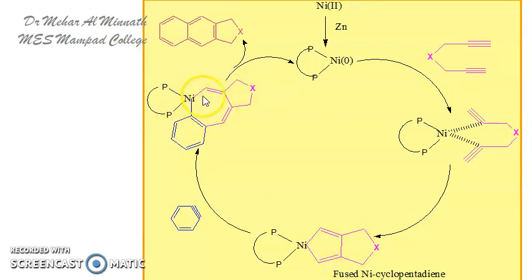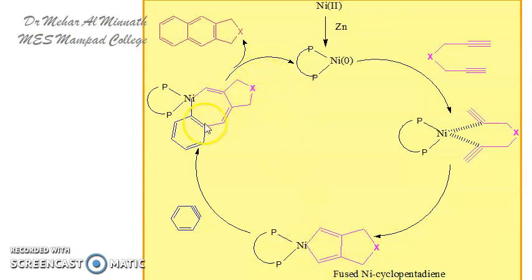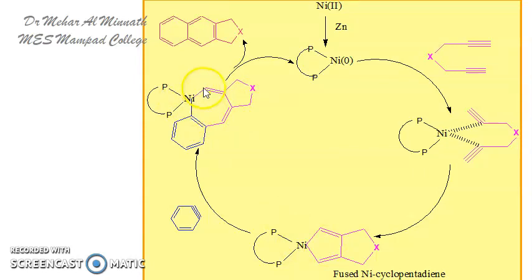When the benzyne is introduced, there is a five-membered ring, and a seven-membered ring is formed as the six-membered benzyne ring inserts. One member of the seven-membered ring is nickel. Numbering from the start: nickel was the fifth atom in the five-membered ring, and after benzyne insertion nickel becomes the seventh atom in the seven-membered ring. So the benzyne ring has been inserted here.